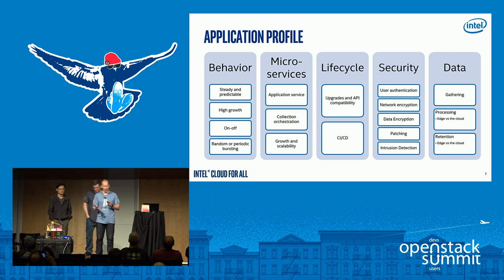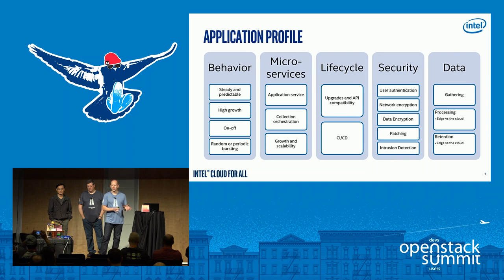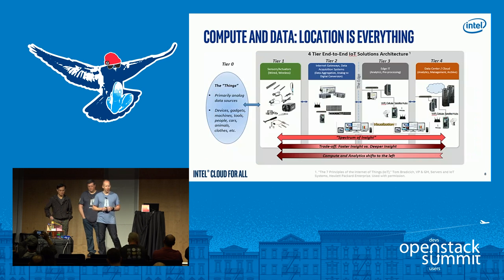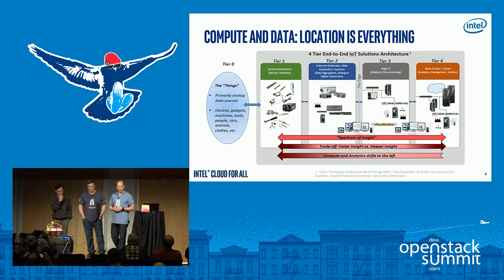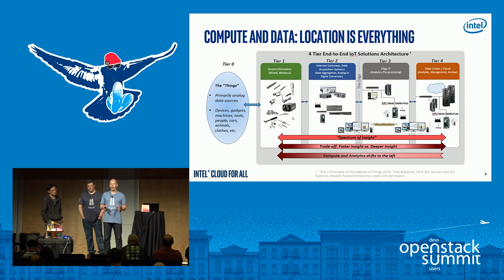Now let's look at how we manage data and where you're gathering it. IoT brings more options for data gathering. In the cloud you get deep compute, deep analytics, and access to a lot of historical data. But IoT devices are getting stronger and you can do some analytics there too — you need to take advantage of that. This is a great slide from Tom Braddich at HP, showing the spectrum of insight for where data analytics can happen. Location can be everything.